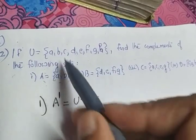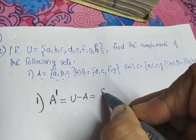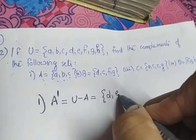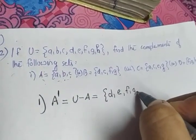So A can be removed, B can be removed, C can be removed. So U minus A will be equal to {d, e, f, g, h}.